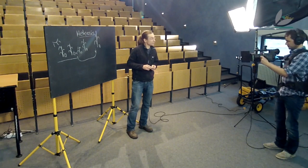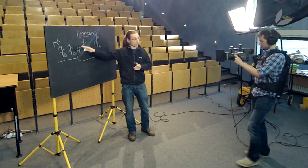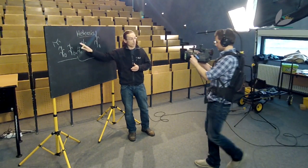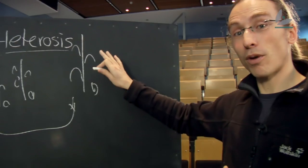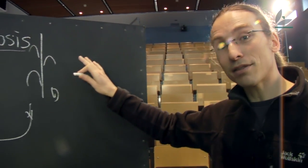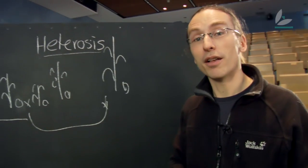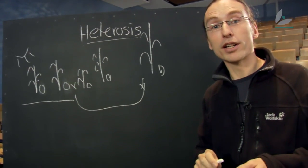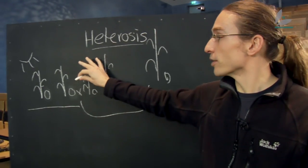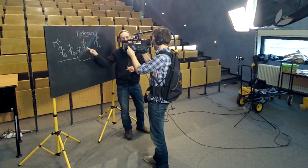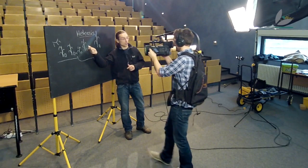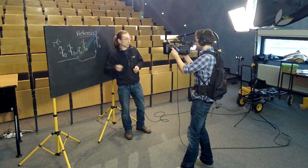The amount of heterosis is very different depending on the lines that are crossed. And as there are very many lines and even more crosses, it's impossible to test all these in the field. Therefore, scientists have long tried to predict the amount of heterosis based on some traits of the parents. They started with analyzing the genes of those lines but only with limited success.